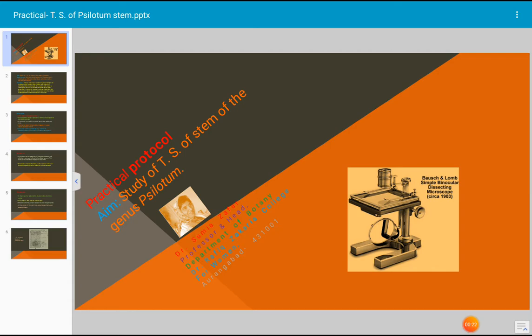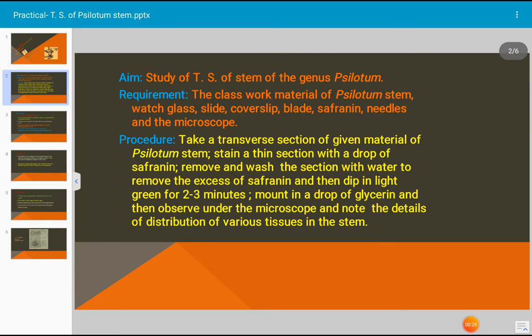Let us see the internal structure of stem of Psilotum. For the practical, the requirement is we need class work material of Psilotum stain, watch glass, slide, cover slip, blade, saffranine, needles, and microscope. This is the requirement of practical.